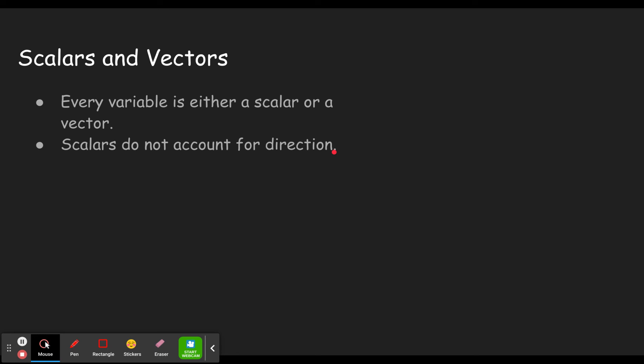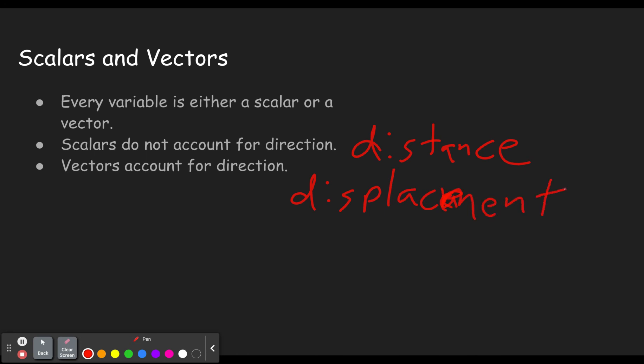Distance is a scalar. We will not care about direction when we're measuring the distance. Next, vectors account for direction. For example, force. If I push one direction on something and then I push the opposite direction on it, those forces cancel out and the thing doesn't move. So force is a vector because direction matters. Well, it turns out displacement is a vector as well. Displacement. So distance is a scalar.